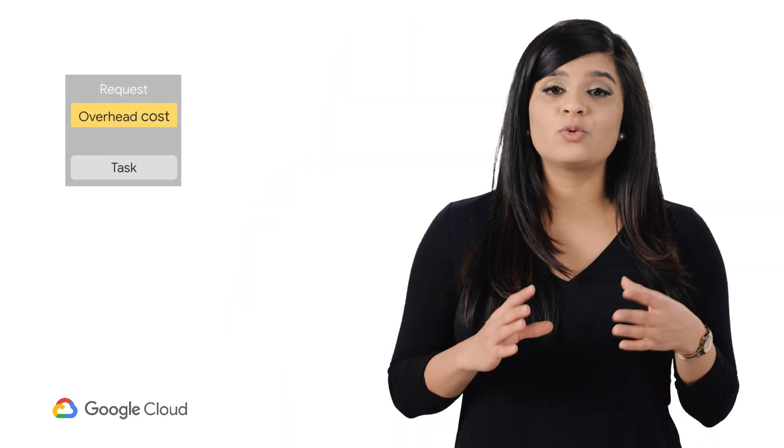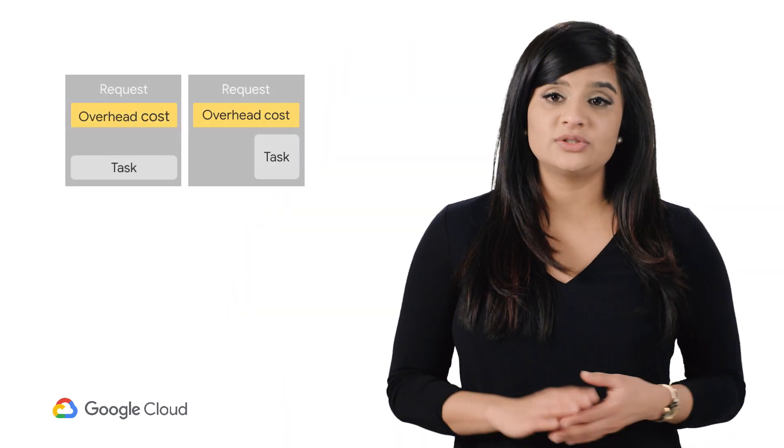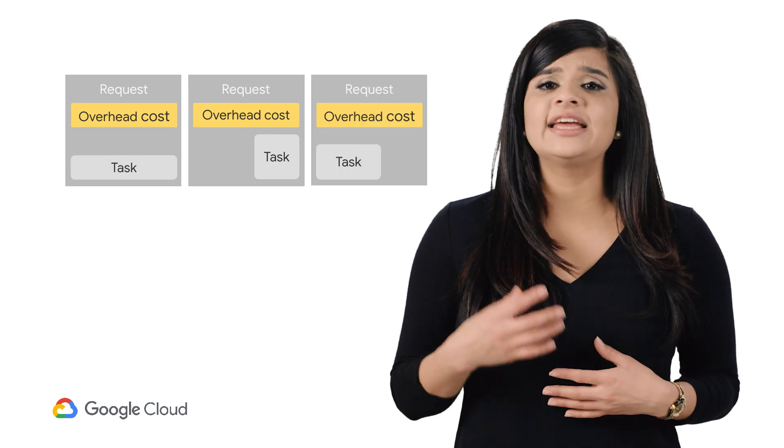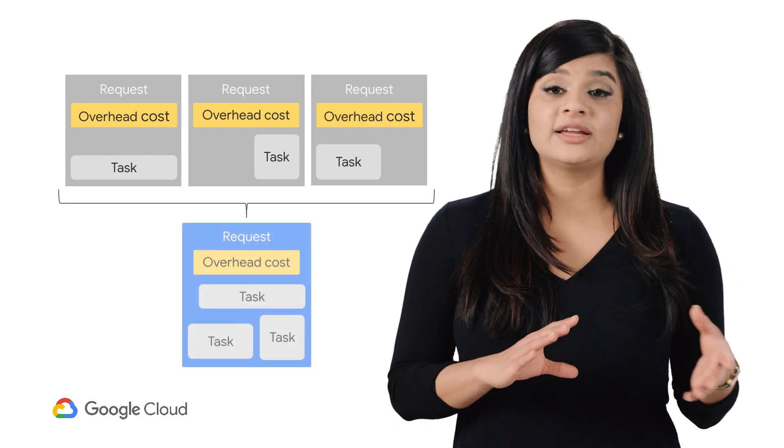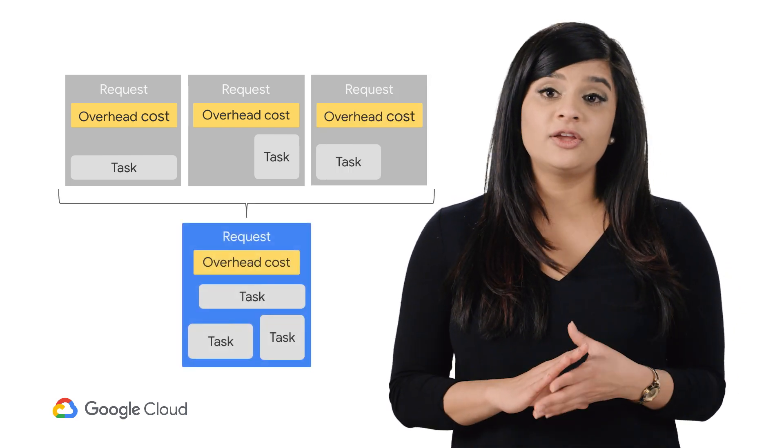So now, we all agree that we should definitely group our requests. The Docs API wants to help you, so it offers a special method called batch update. A batch update is one or more updates to a document. Think of it as a container for your write requests you'd like to make for your document on the server. Let's see an example of a batch update.